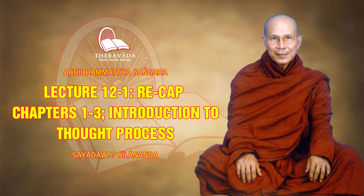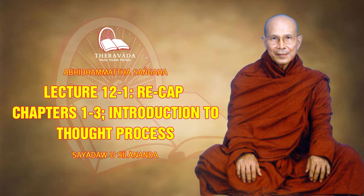The third division is kamavacara sobhana cittas. They are called sobhana, or beautiful consciousness, because they are accompanied by beautiful mental factors. Akusala, ahetuka, and kamavacara sobhana cittas belong to the class of sense-sphere consciousness. They are experienced mostly in the human realm, four woeful states, and six celestial realms.